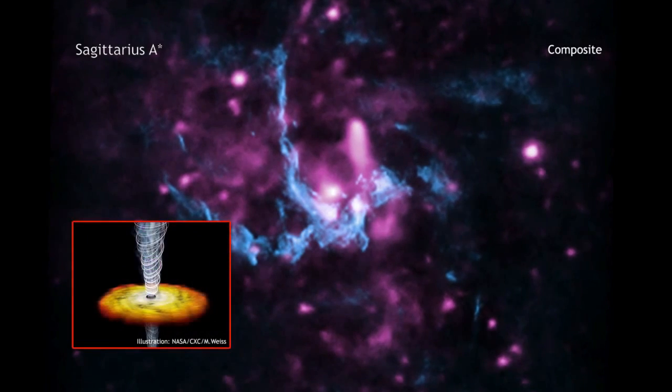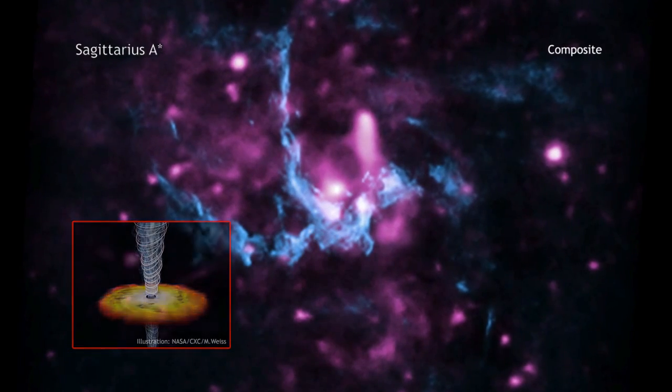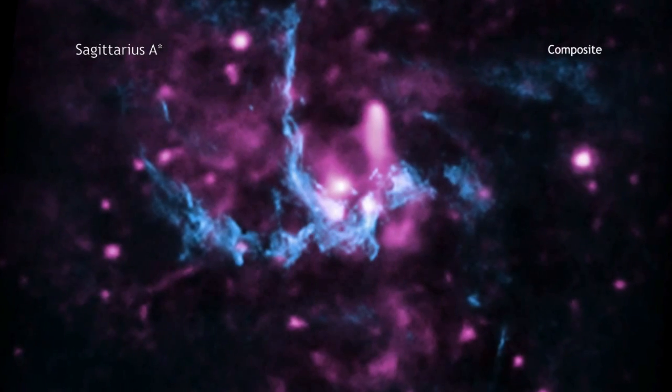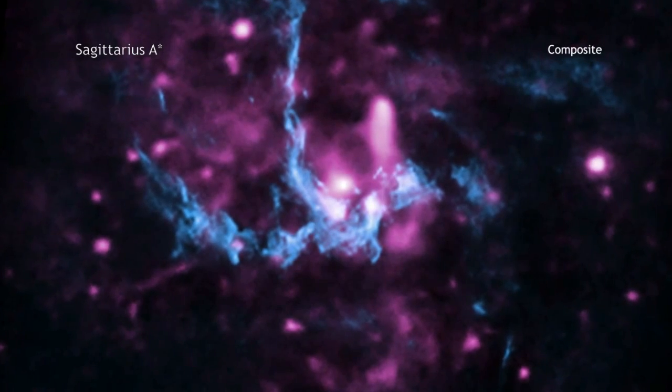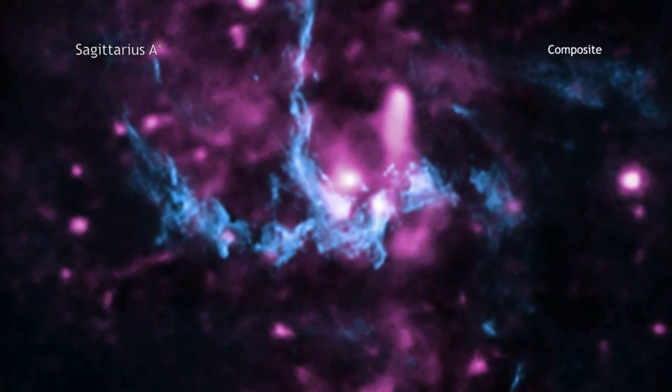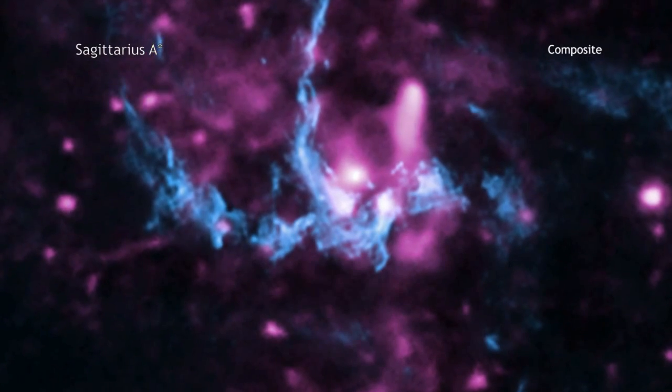Jets of high energy particles are found throughout the universe on large and small scales. They are produced by young stars and by giant black holes. Jets play important roles in transporting energy away from the central object and, on a galactic scale, in regulating the rate of formation of new stars.